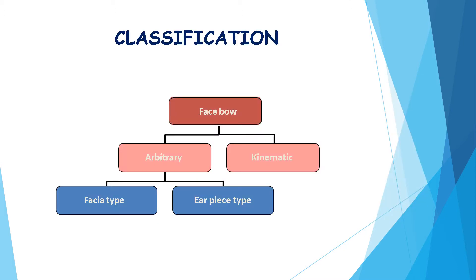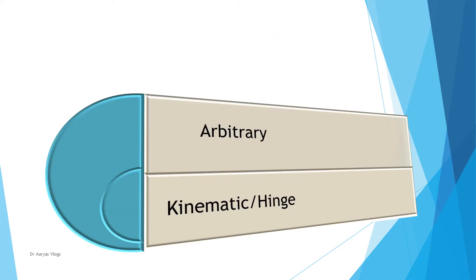Coming to the classification, facebows can be mainly classified into arbitrary and kinematic. Arbitrary is again classified into fascia type and earpiece type. There are mainly two types: arbitrary and kinematic or hinge facebow. The arbitrary facebow determines the approximate center of rotation of the condyle, whereas the kinematic facebow establishes the center accurately.